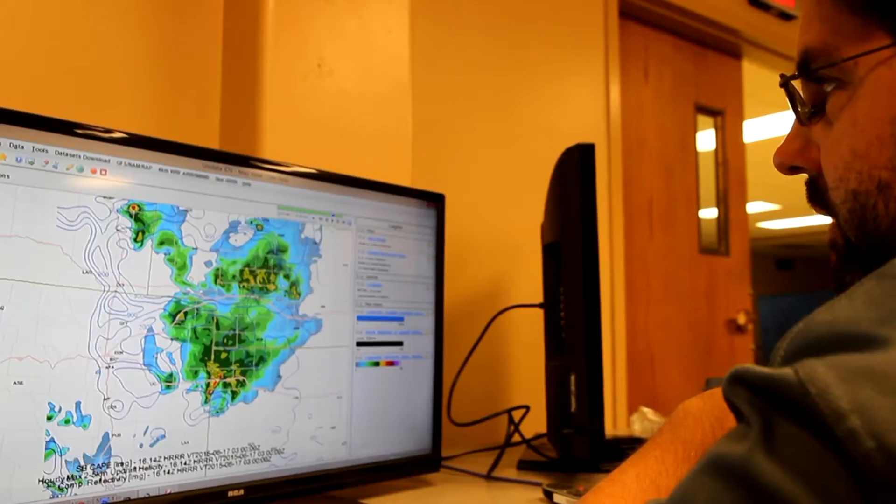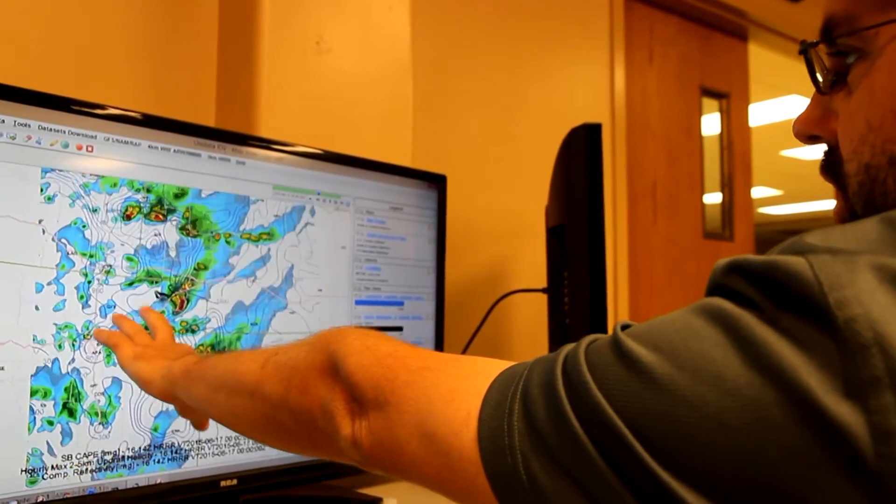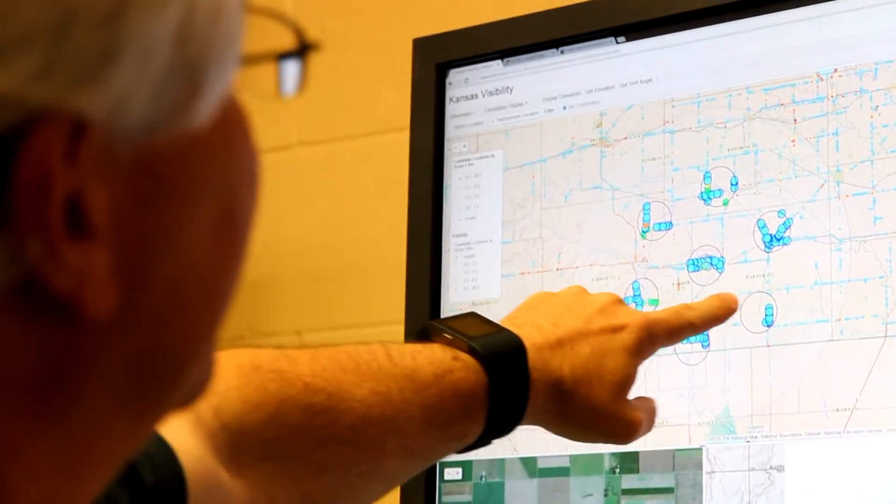The goal of PECAN, like many weather studies, is to try to understand a particular phenomenon better. Usually it's true that if we understand something better we can predict it better, and that's not just true in meteorology, it's true in almost every field of endeavor.